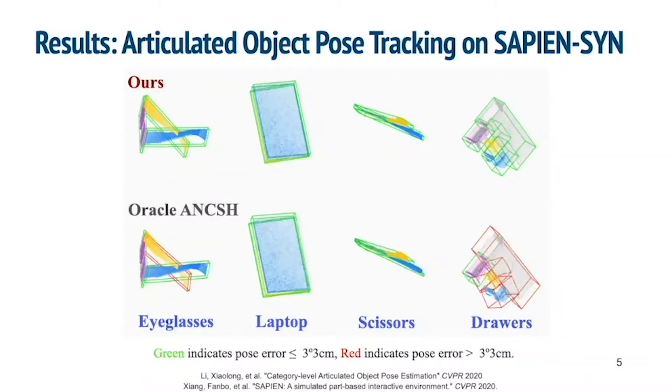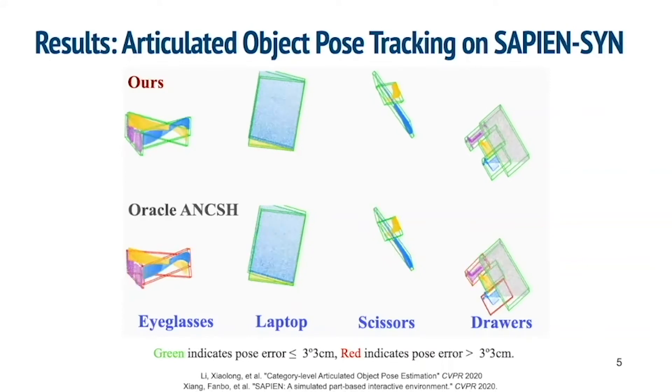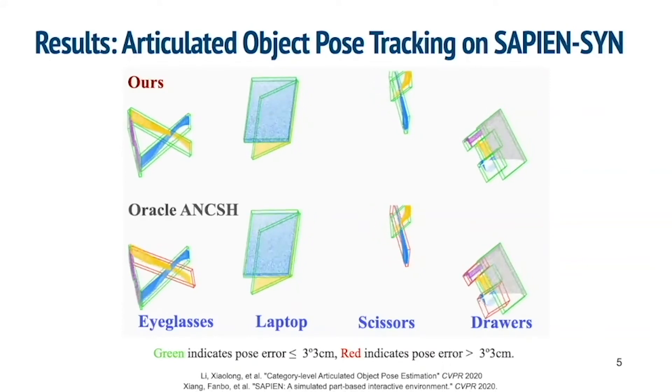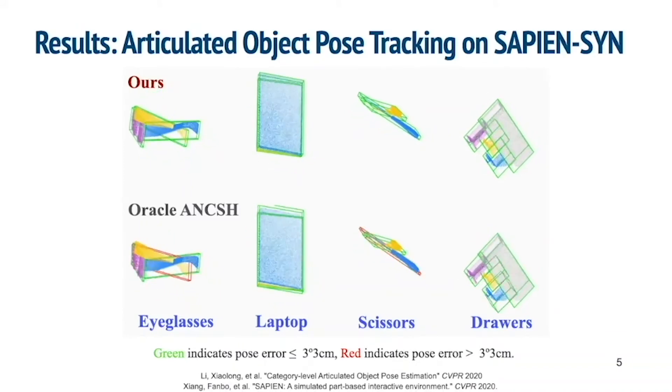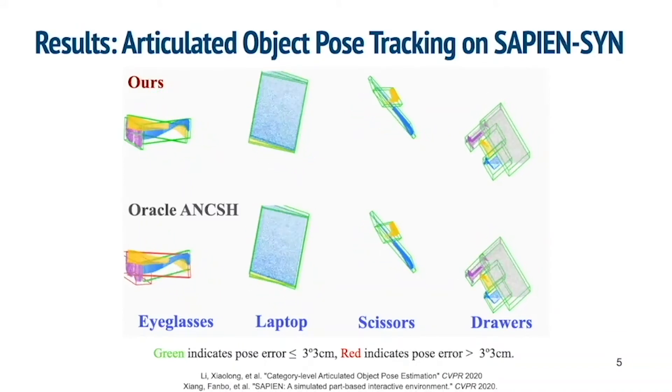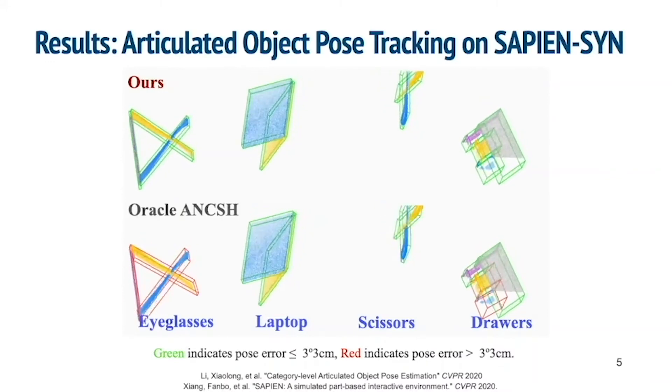For articulated objects, we show qualitative comparison on our Sapien synthetic dataset, where both the camera viewpoint and the object joint state change over time. Compared to the state-of-the-art single-frame category-level articulated object pose estimation method, our predictions are more accurate, temporally coherent, and robust to occlusions.